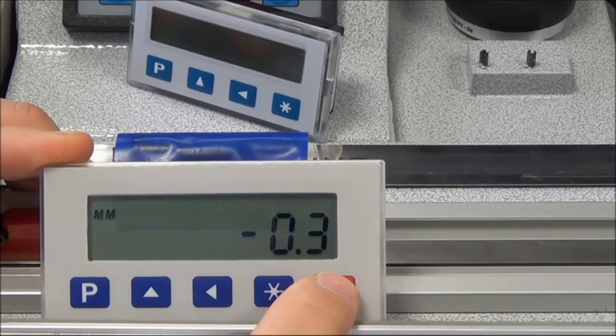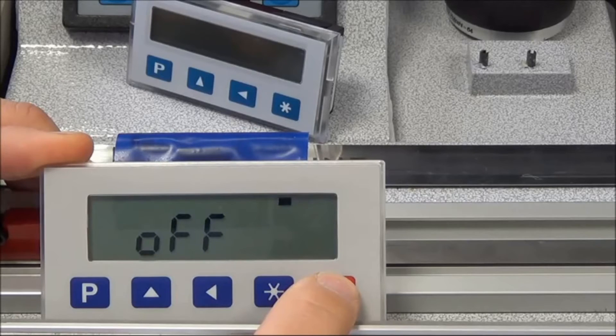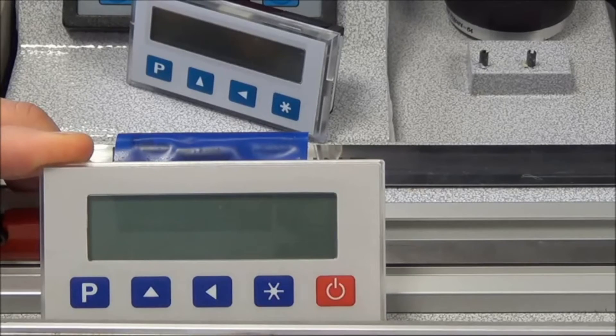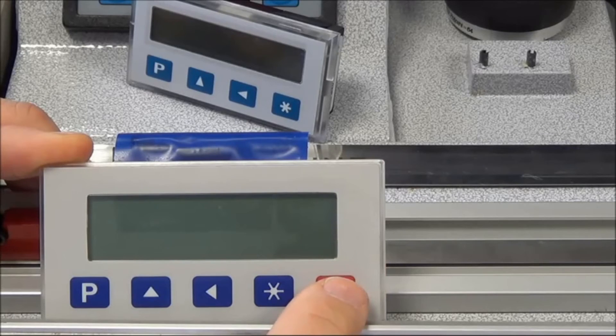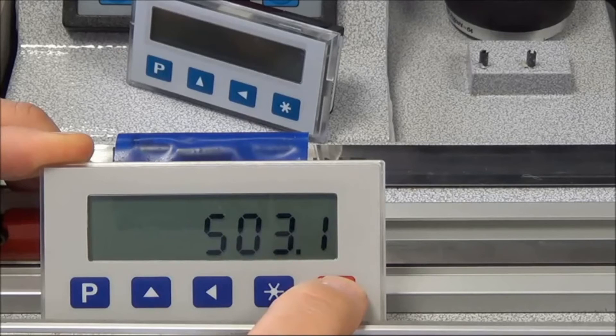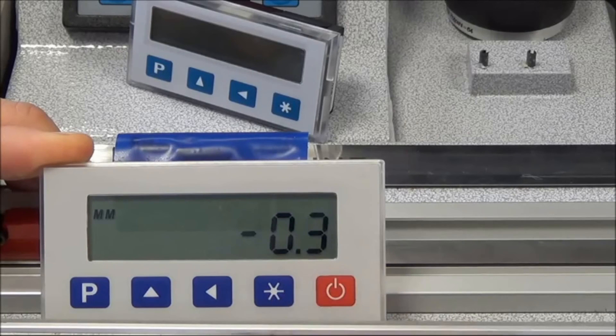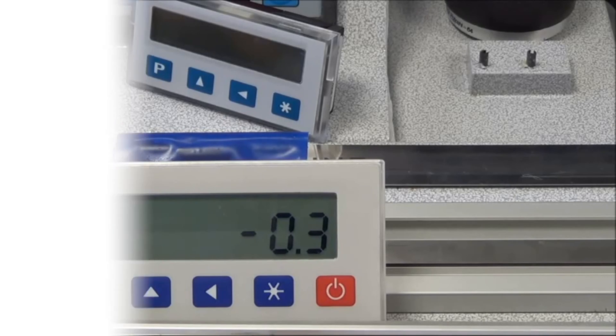Then we can switch the axis off. We know that the customer hasn't moved the axis with the power off, so we should still be at -0.3. We switch it on and it's -0.3, so the axis hasn't moved and the display isn't flashing to indicate that we need to datum the axis.